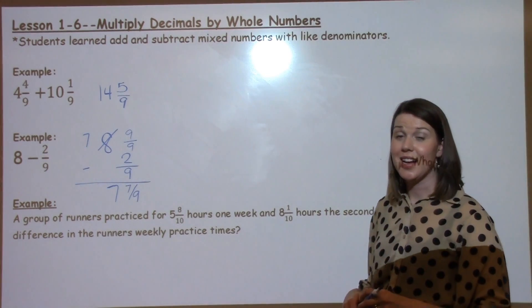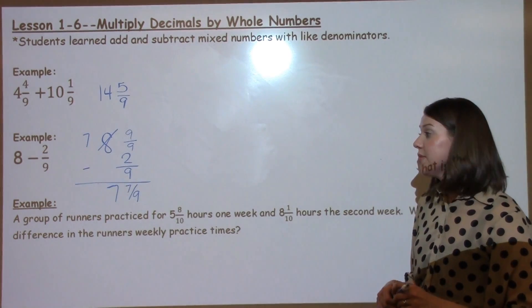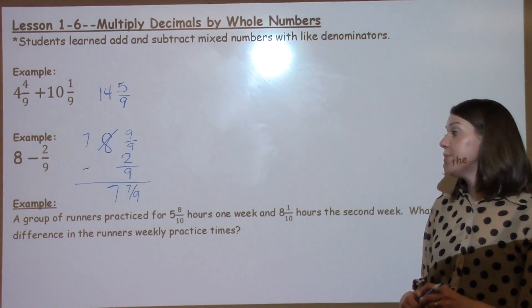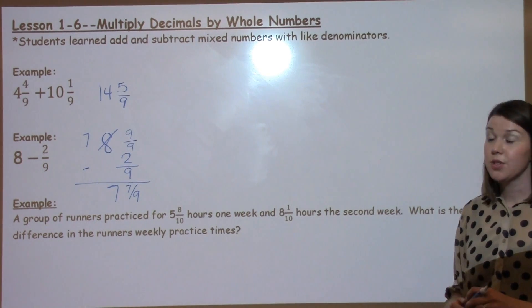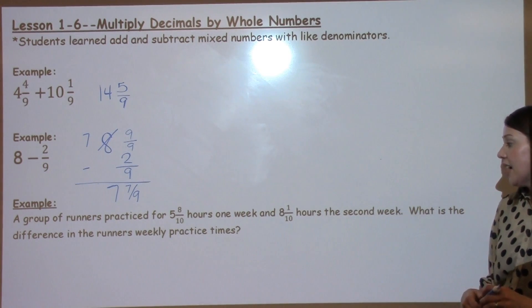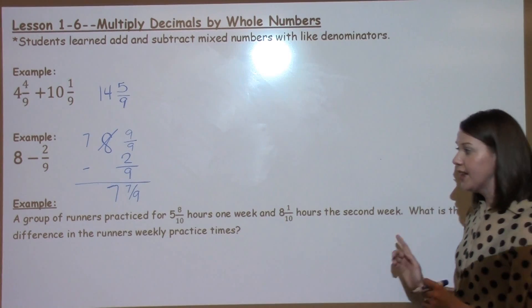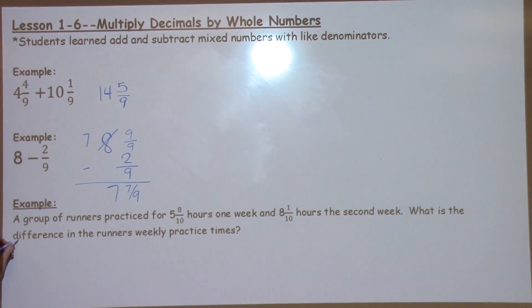The final type of question that students saw today was encountering word problems. This question says, a group of runners practiced for 5 and 8 tenths hours one week and 8 and 1 tenths hours a second week. What is the difference in the runner's weekly practice time? We know difference. The two f's make a subtraction sign. So we know difference tells us to subtract.